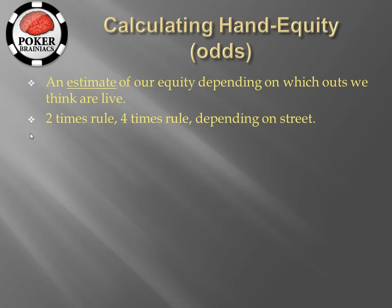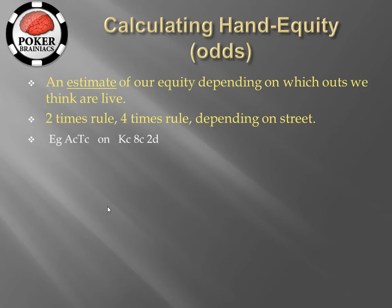If you are on the flop with two streets to come, you typically use the four times rule and multiply the number of outs you think you have by four. If you are on the turn with one street to come, you multiply the number of outs by two. Let's look at an example: let's imagine we have the ace of clubs and the ten of clubs on a king-eight-deuce board with two clubs.